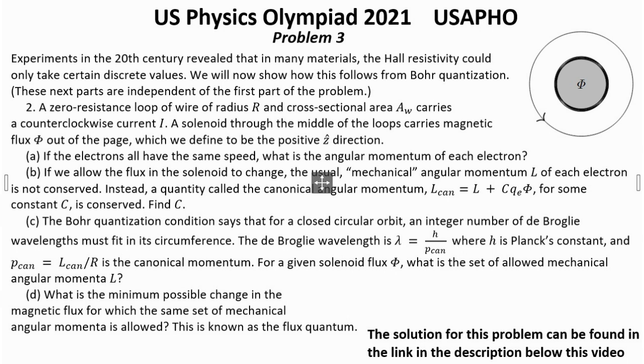For a given solenoid flux Φ, what is the set of allowed mechanical angular momentum L? Question D: What is the minimum possible change in the magnetic flux for which the same set of mechanical angular momentum is allowed? This is known as the flux quantum.